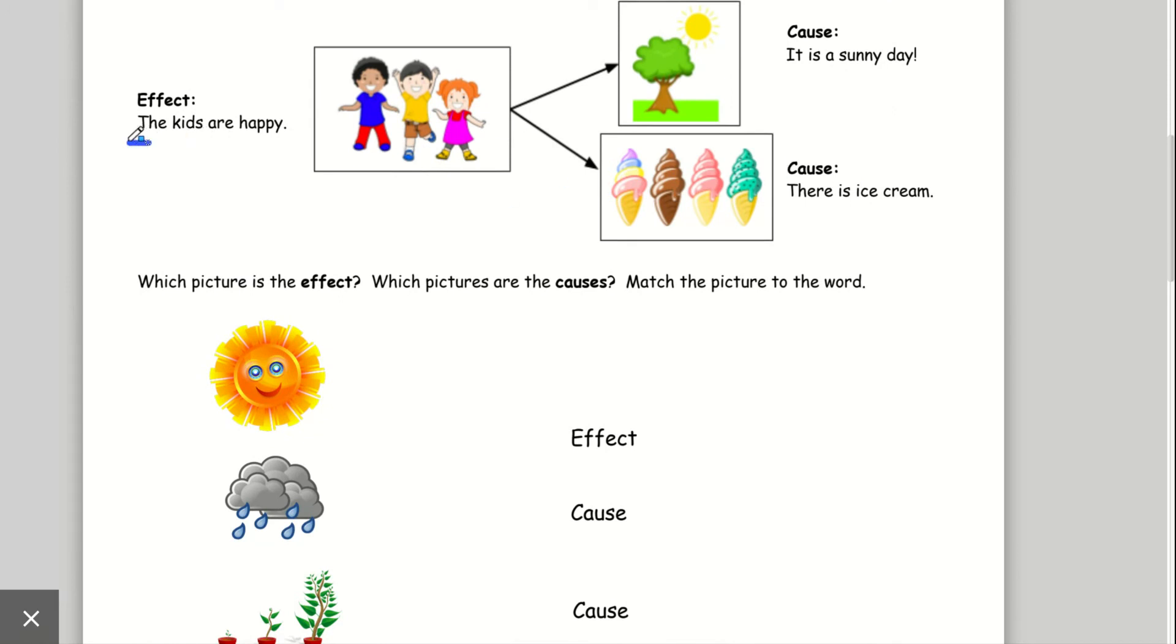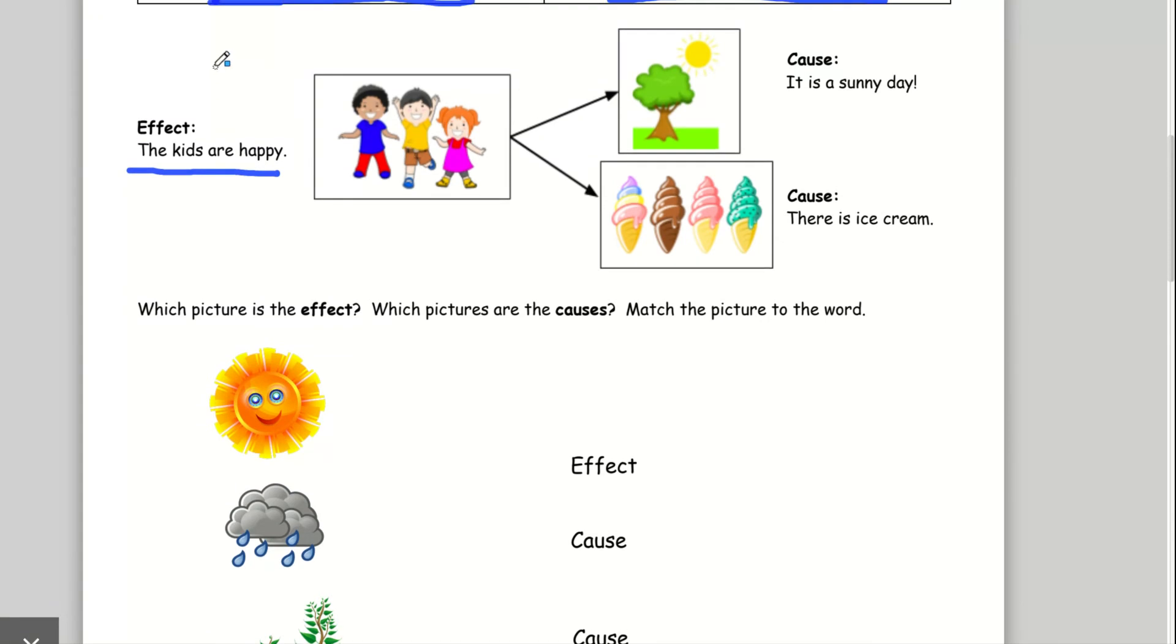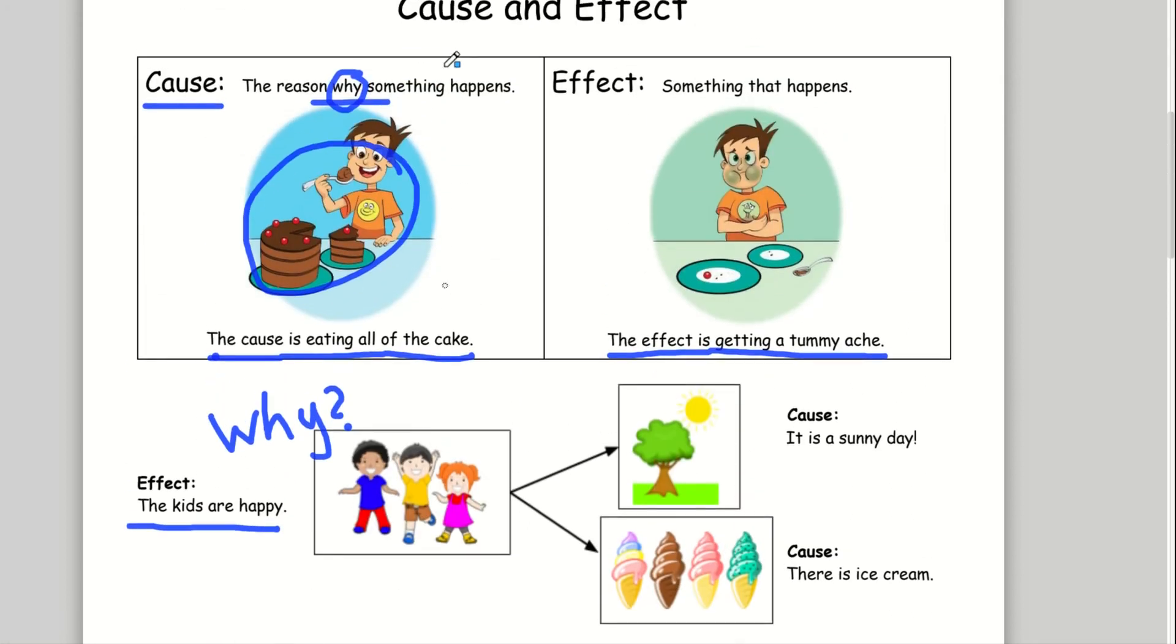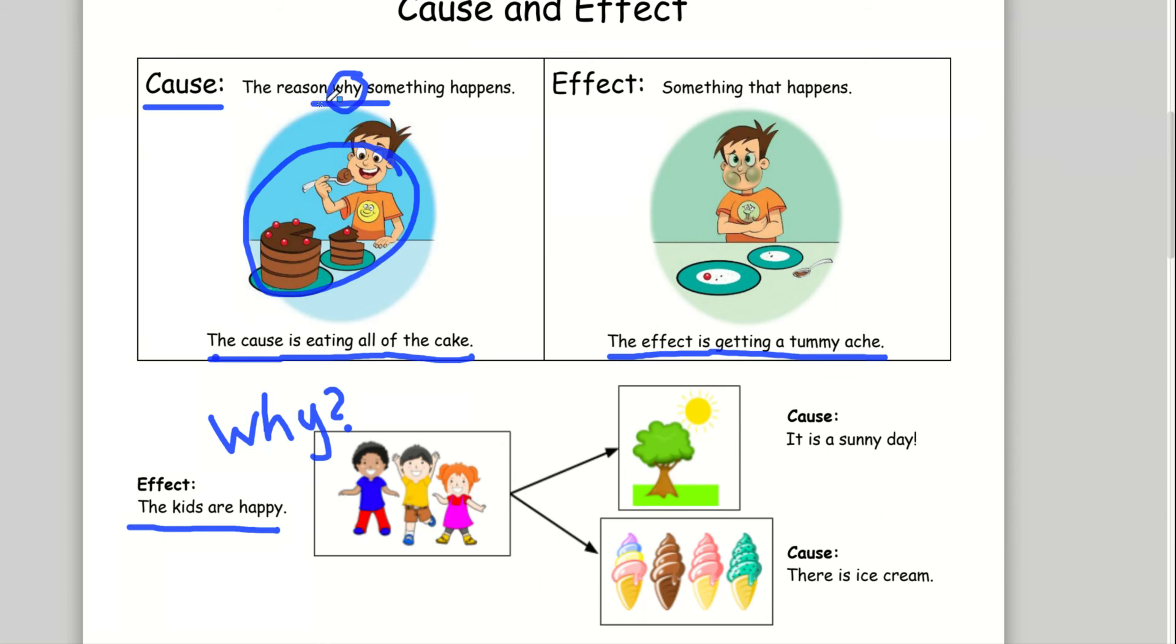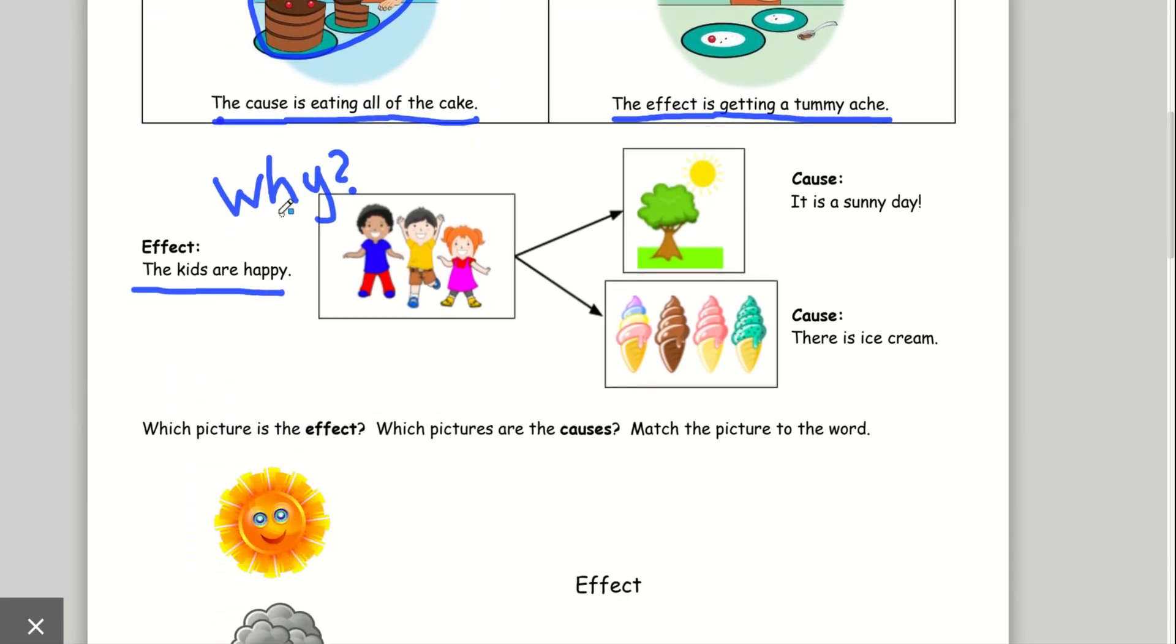In this example, the thing that happened is the kids are happy. What question should we ask if we want to know the cause? Why? The cause is the reason why something happens. So why are the kids happy?